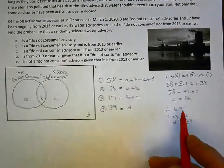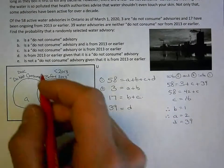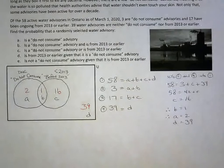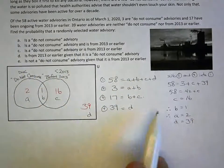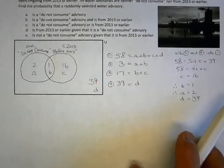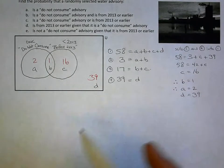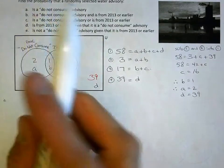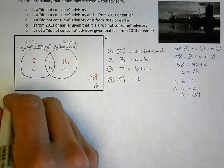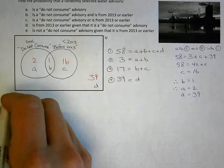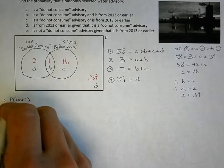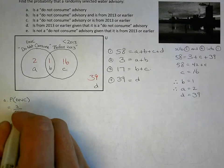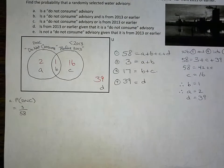So all our numbers are filled in: 16, 1, 2, 39. Maybe you can do it without this strategy, but I like it because it's very reliable. Now we can find a whole bunch of different probabilities. Part A: find the probability that a randomly selected water advisory is a do not consume. The probability of a do not consume water advisory is 3 out of a total of 58.